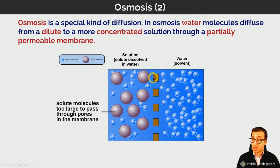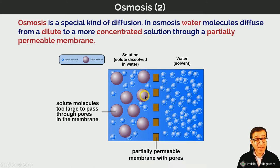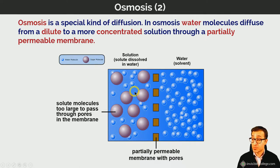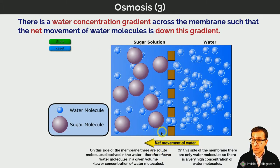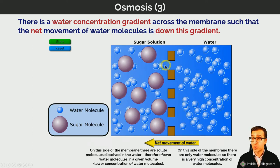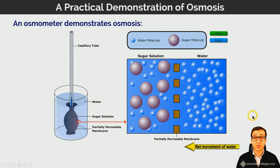In this example, glucose molecules are too large to pass through the plasma membrane, but water molecules can pass through the pores. So water molecules move from the right-hand side where they are in high concentration to the left-hand side where they are in low concentration, by osmosis. This is net movement — some water molecules move from left to right, but far more move from right to left, so the net movement of water by osmosis is from right to left.